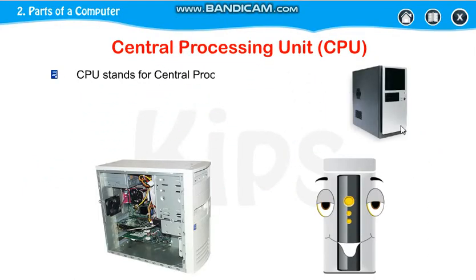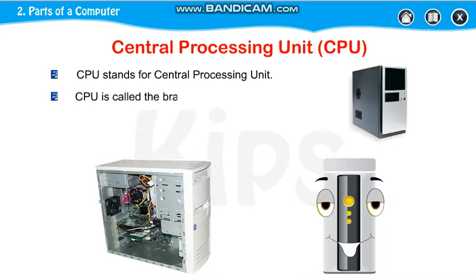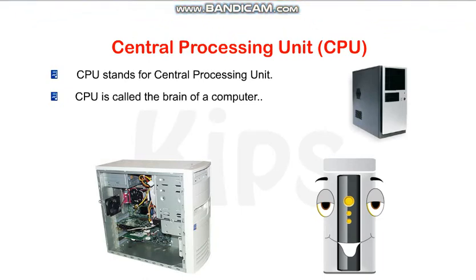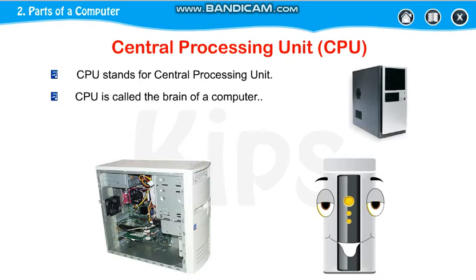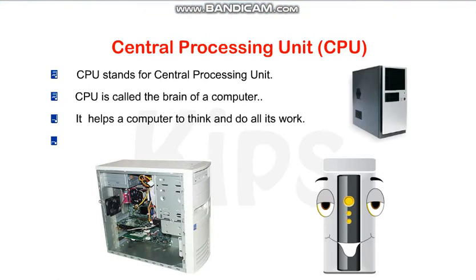This is your Central Processing Unit. If we open it, it looks like this — different wires are there, different chips are there, and one fan is there. This is your CPU, which is the brain of the computer. Like your body is controlled by your brain, the computer is also controlled by the CPU. It helps the computer to think and to do all its work.